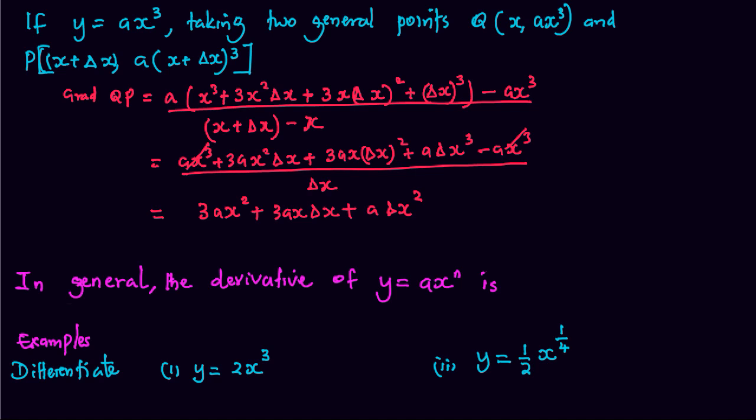So that the gradient QP as delta x approaches zero is equal to 3Ax squared, because this will become zero, this will also become zero.